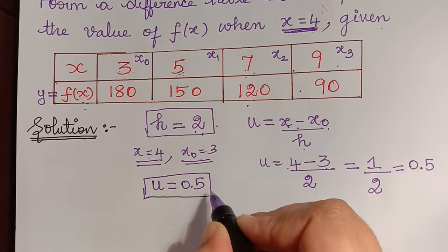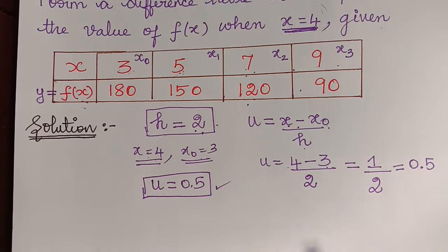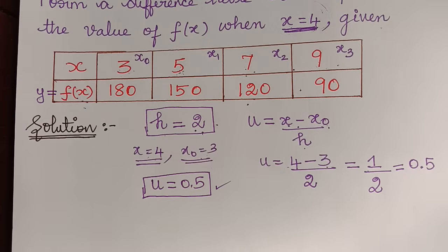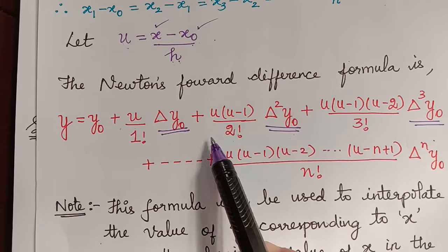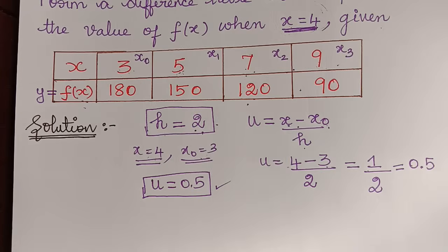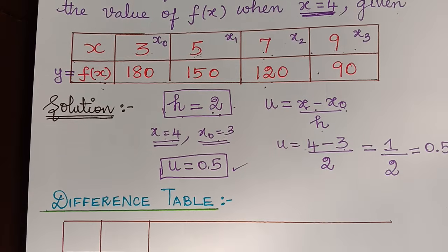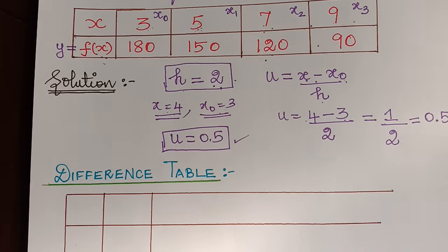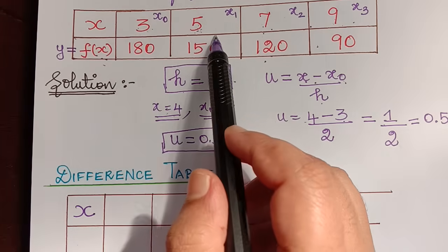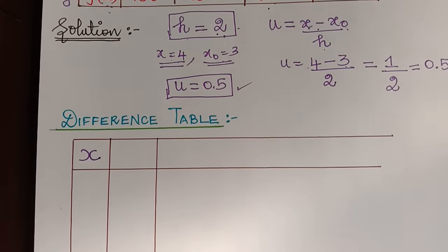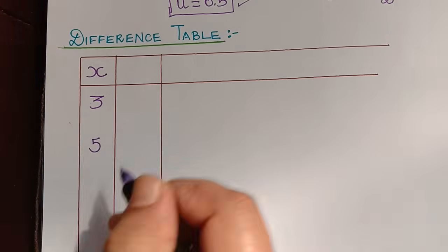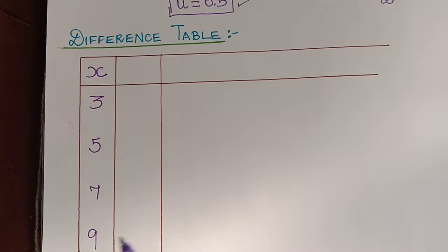Now we have to draw the difference table to find the values of delta y-naught, delta-squared y-naught, delta-cubed y-naught, and so on. We form the difference table with the first column for x values: 3, 5, 7, and 9.